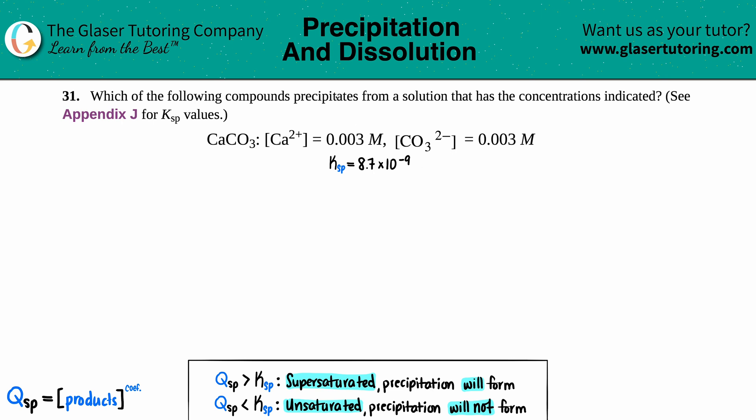Number 31: Which of the following compounds precipitates from a solution that has the concentrations indicated? See Appendix J for the Ksp values. In this case, we have calcium carbonate. They told us that the calcium concentration is 0.003 molarity and the carbonate concentration is 0.003 molarity. From that information, we want to find out will a precipitate form?